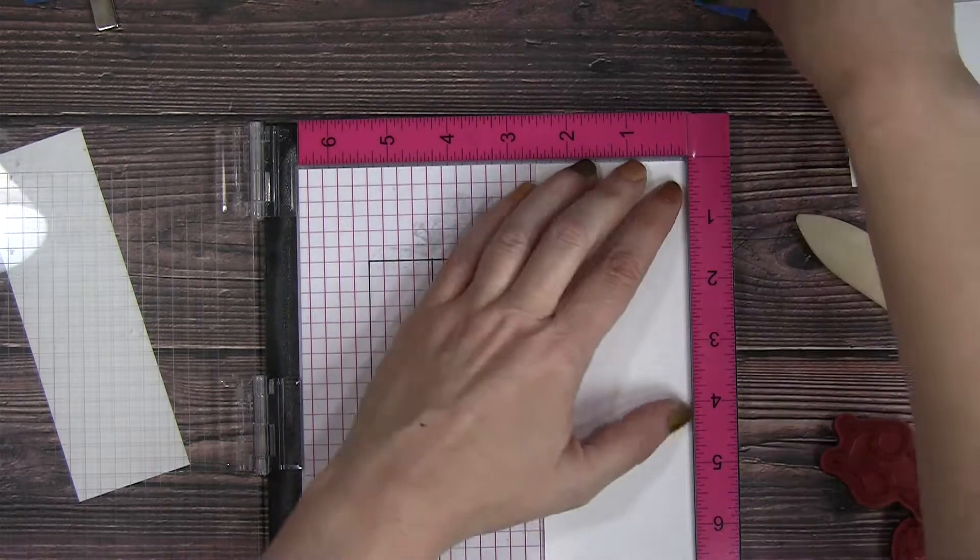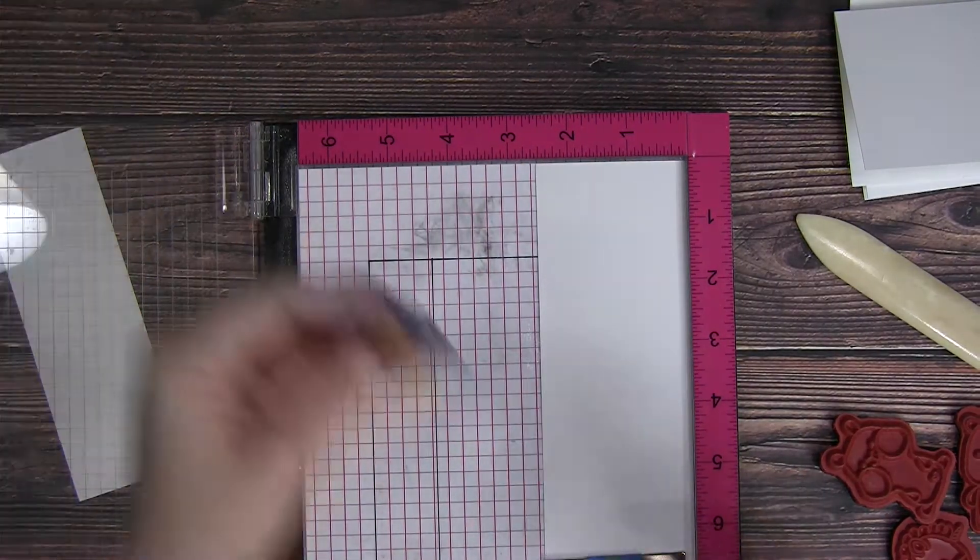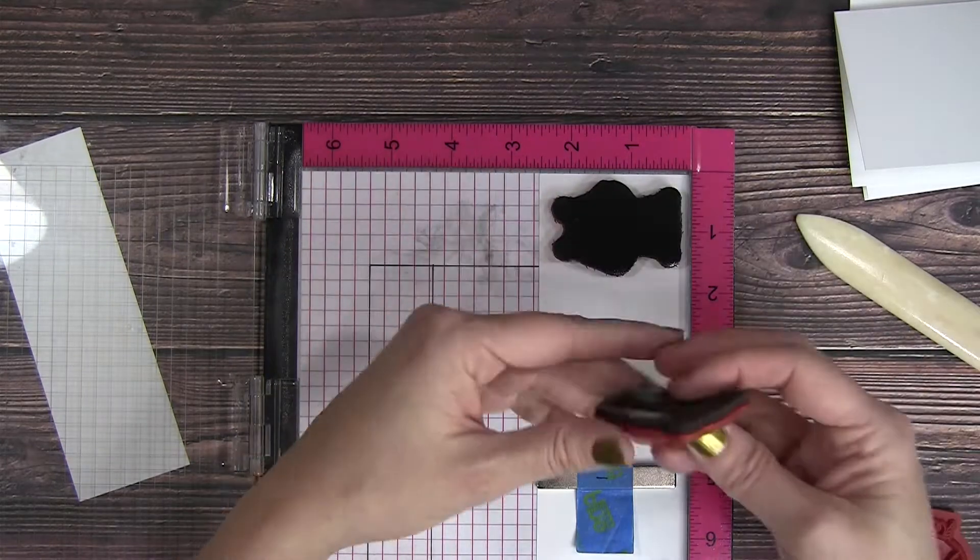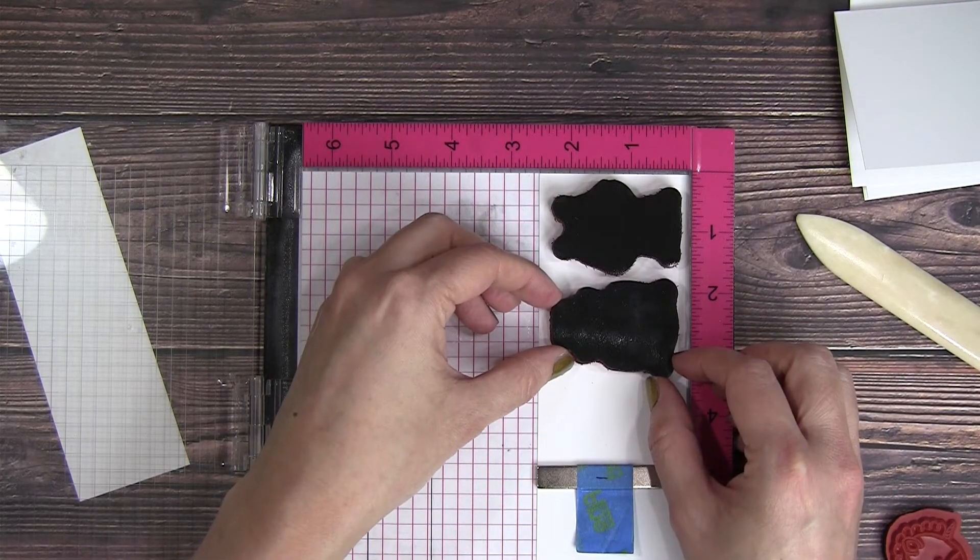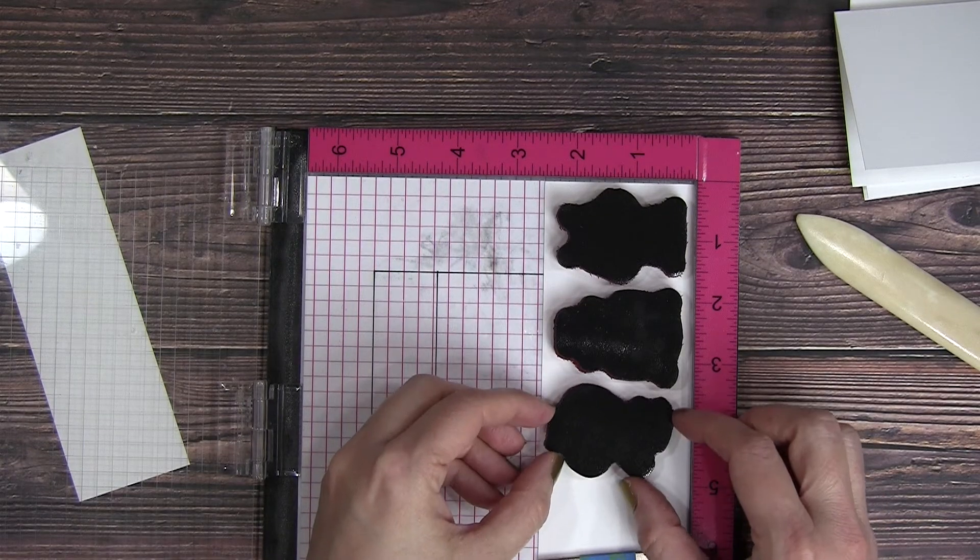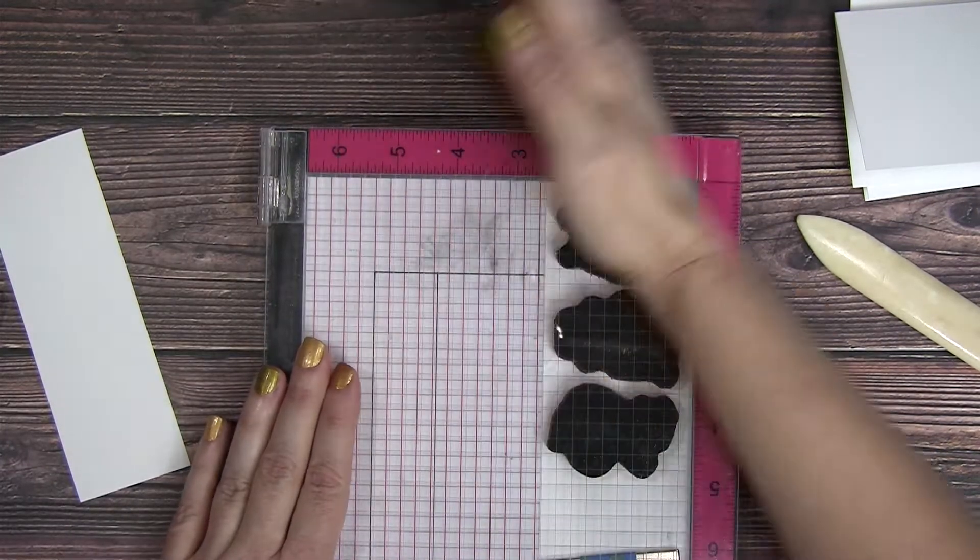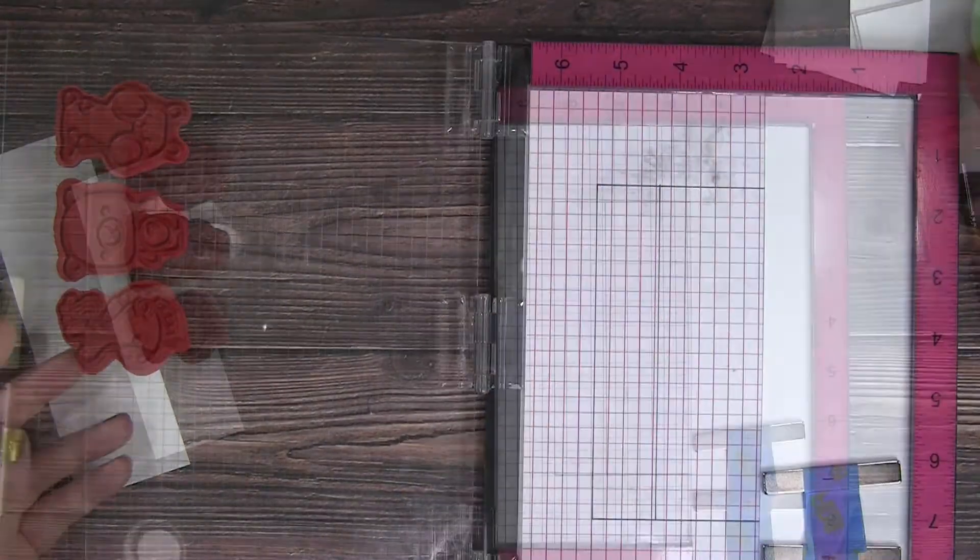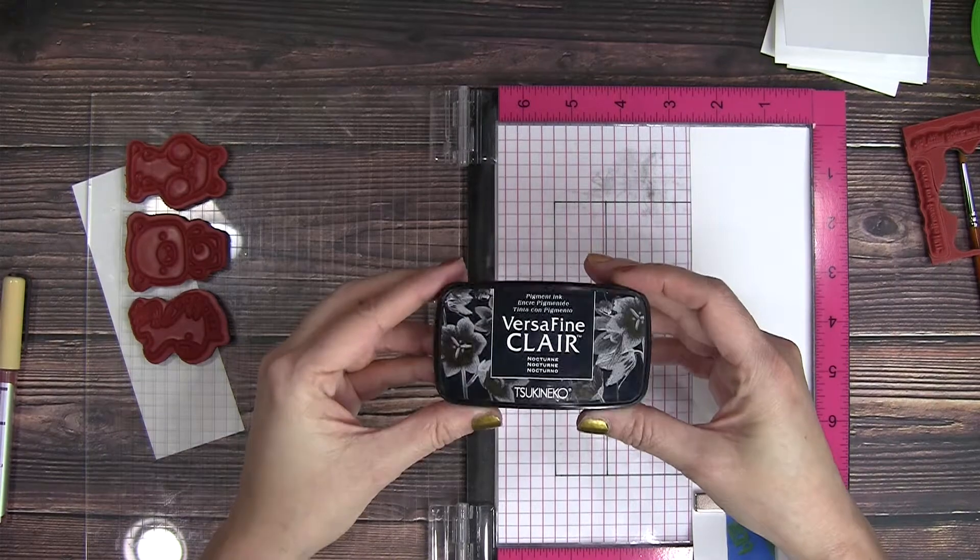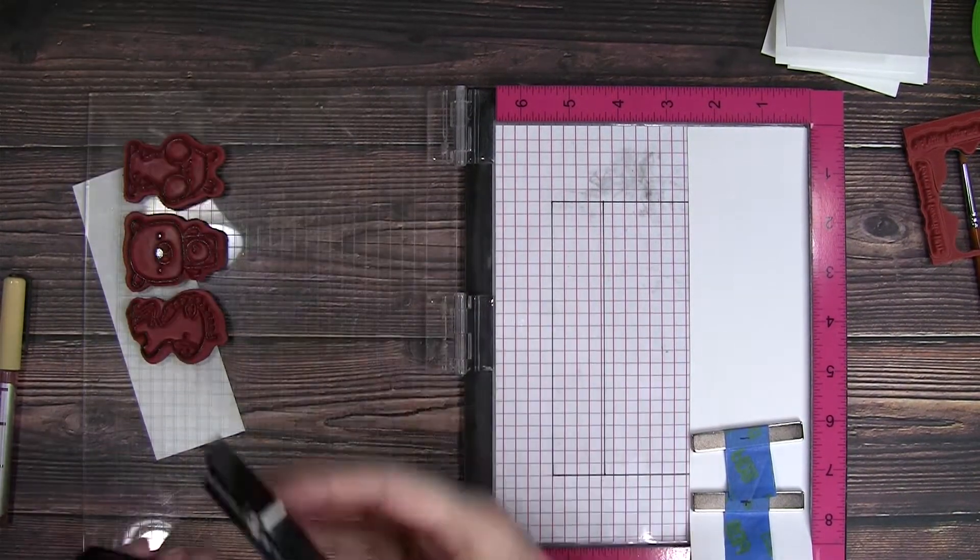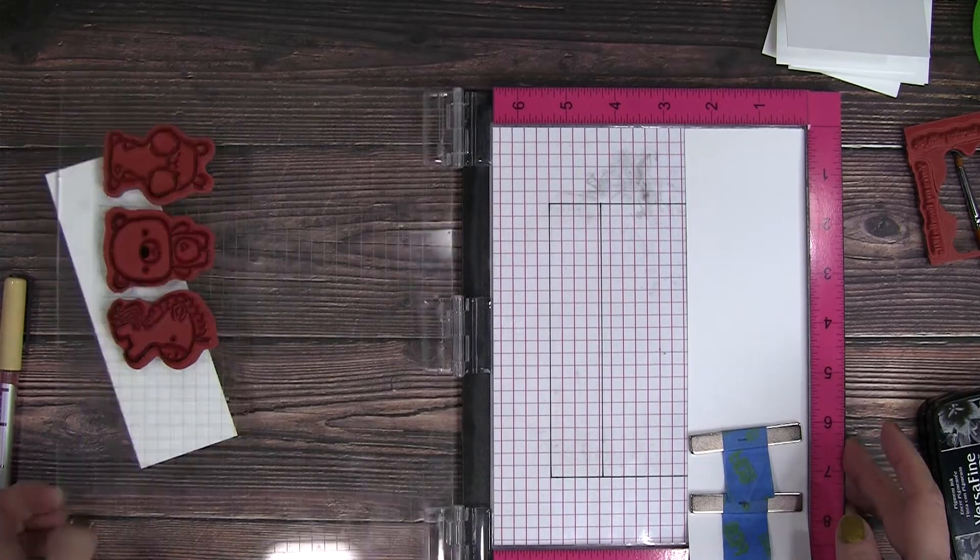I pulled out my original MISTI and I'm just going to use one of those pieces of scrap paper to line up my little images. I'm just going to stamp them all at once, which just makes it super easy. If you wanted to mass produce these you could. That's what I liked about this process - it was easy to create three little valentines from one sheet of paper.